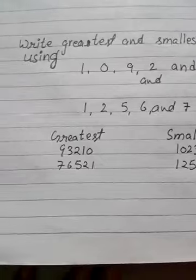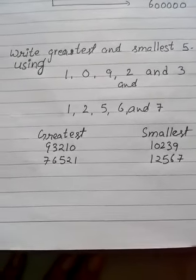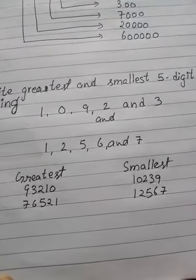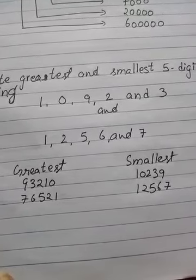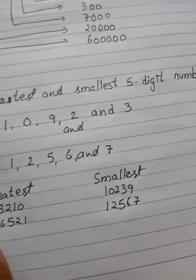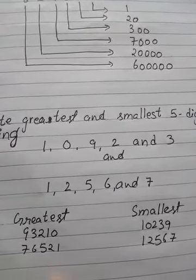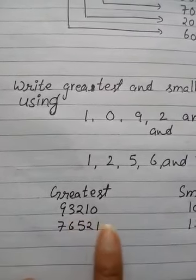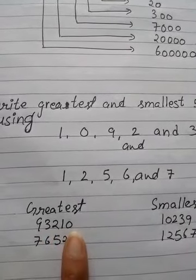There is a way to write the greatest number from given digits. For forming the greatest number, you have to first write the greatest digit, then the next smaller one, then smaller, then smaller, and then the smallest. Like with 1, 0, 9, 2 and 3 — by those digits I have made the number 93,210. That means 9 is greatest, then 3, then 2, then 1 and 0.